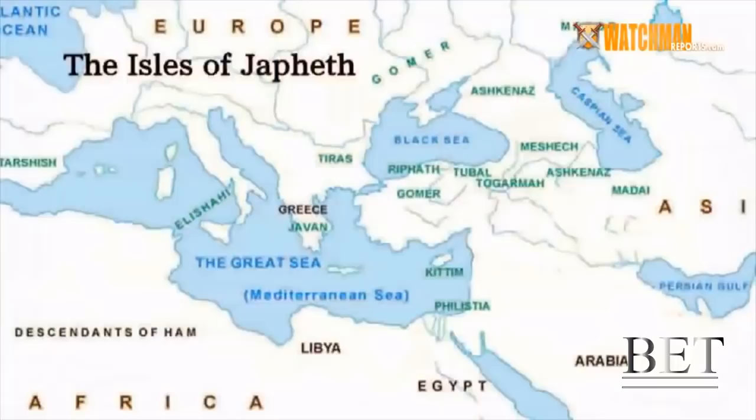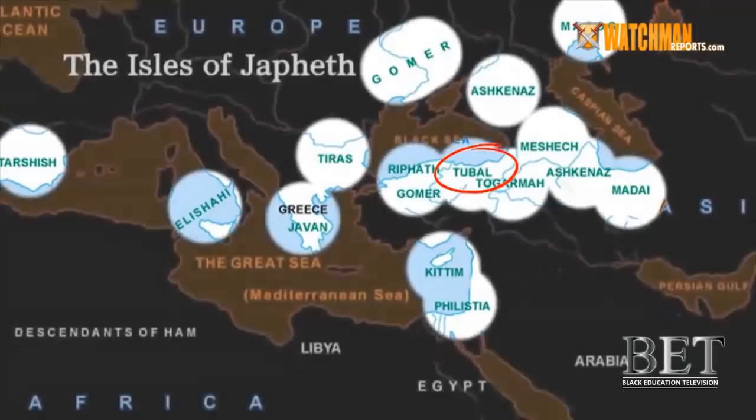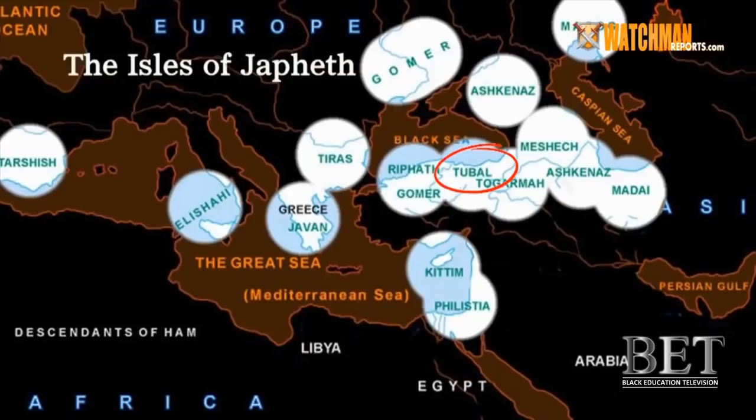The Book of Jasher tells you that the children of Chittim saw the valor of Zepho, and they made Zepho king over them, and he subdued the children of Tubal and all the surrounding islands. Who are the children of Tubal? Tubal was one of the sons of Japheth. Jasher makes it clear that Esau's grandson not only conquered Tubal, but all the surrounding islands of Japheth. He took over their land and totally subdued the sons of Japheth.